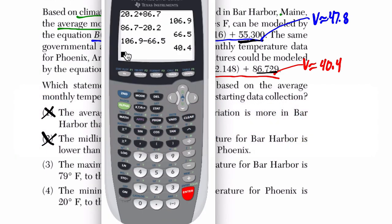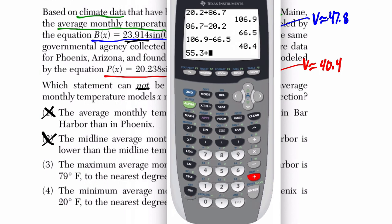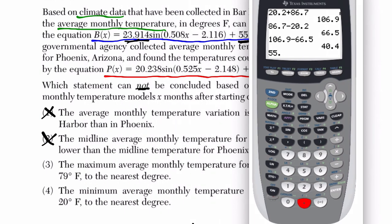Well, 55.3 plus 23.9 is about 79 degrees. Let's just test that, make sure I'm not wrong. So 55.3 plus 23.9. The nearest degree is 79.